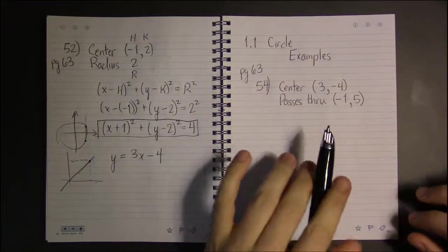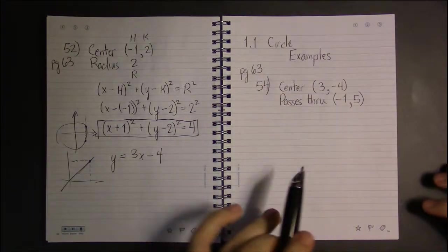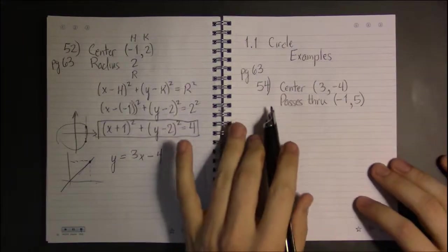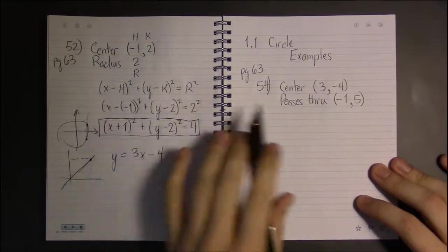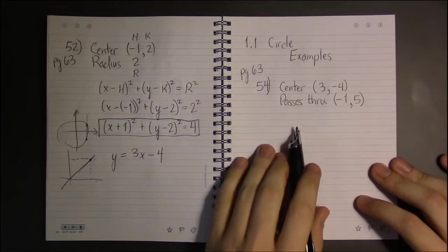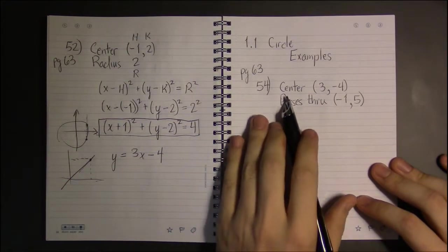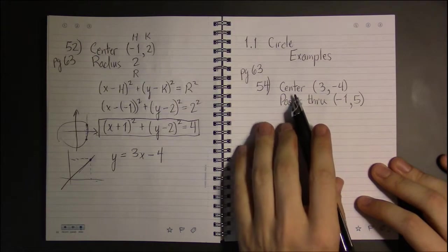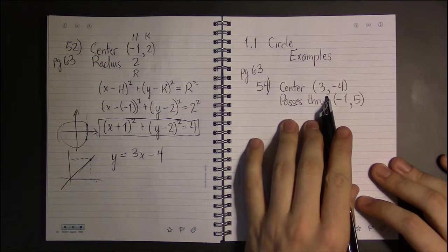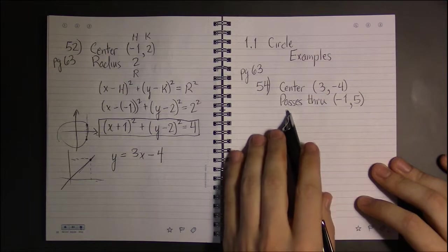All right, so let's look at some examples of these circle problems. We've already done 52, so let's take a look at 54 and then 56. In 54, they tell us what the center of the circle is and they also tell us a point on the circle.